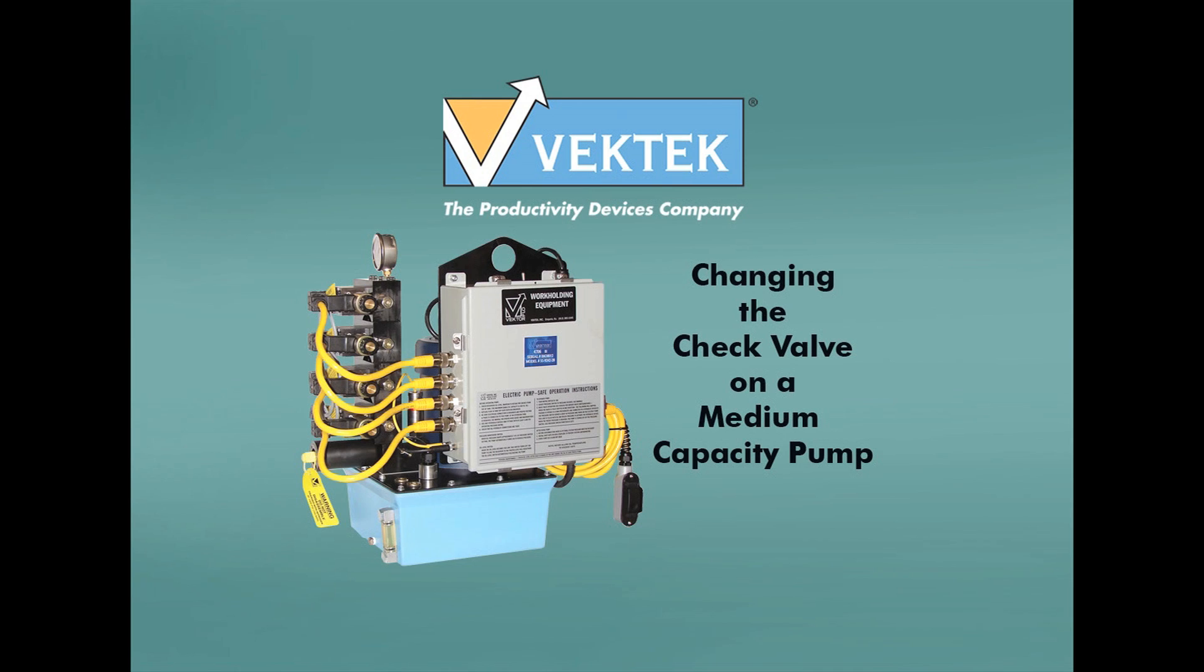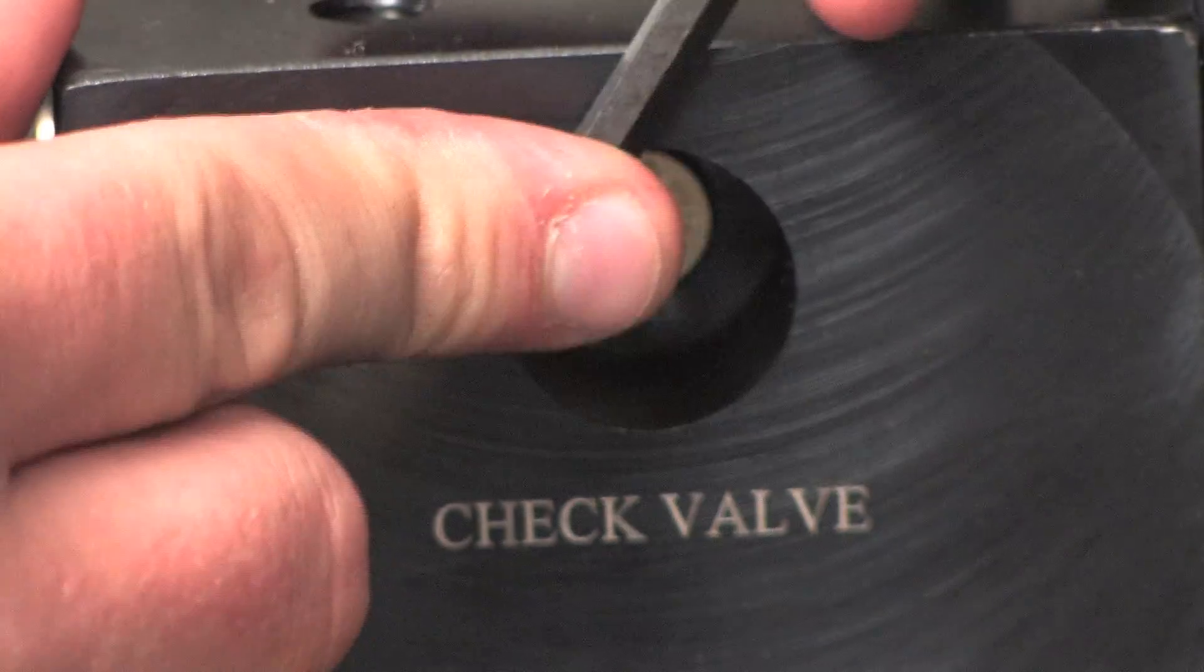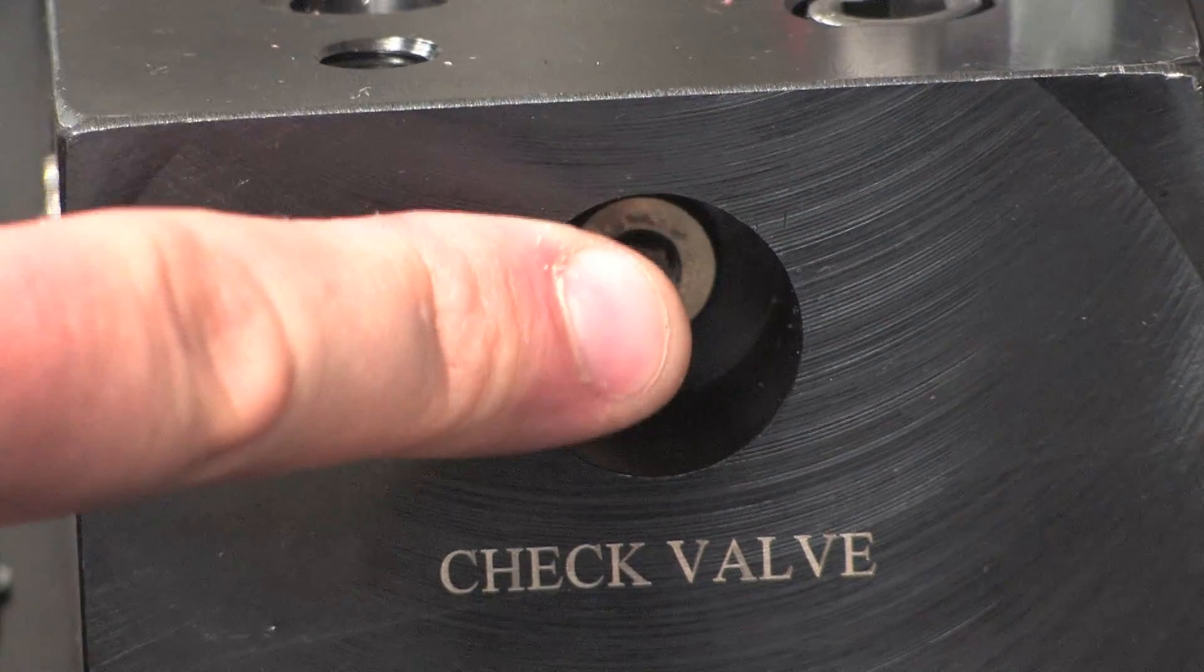These are the steps for changing the check valve in the Vectek medium capacity pump. The check valve is located on the right side of the manifold block where it is labeled.